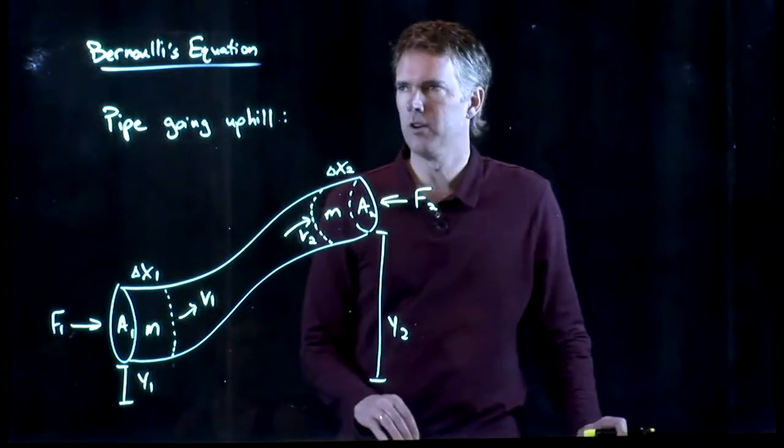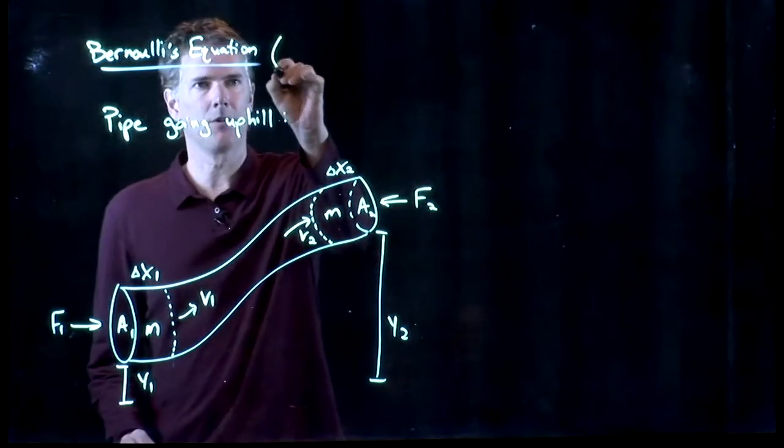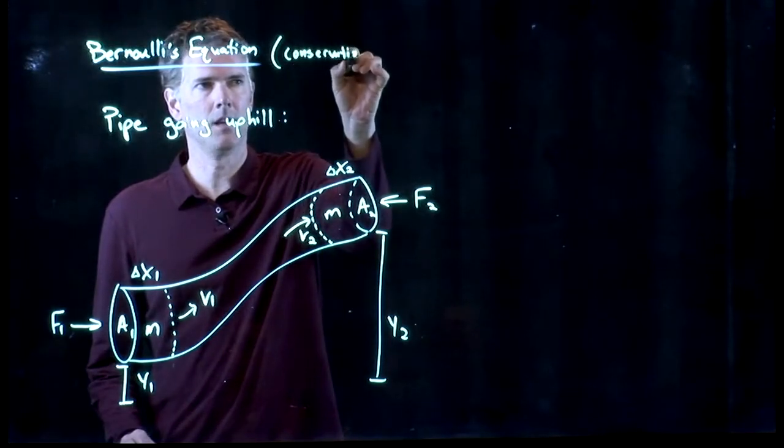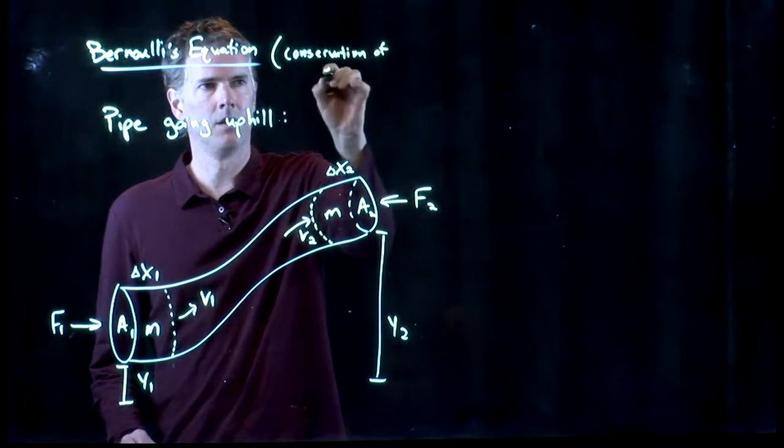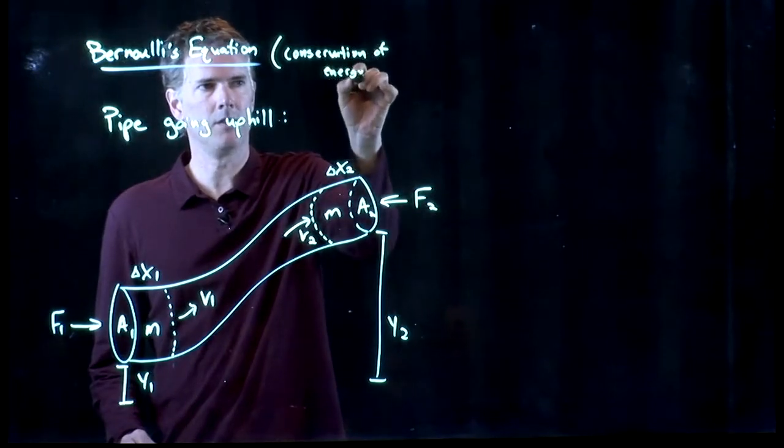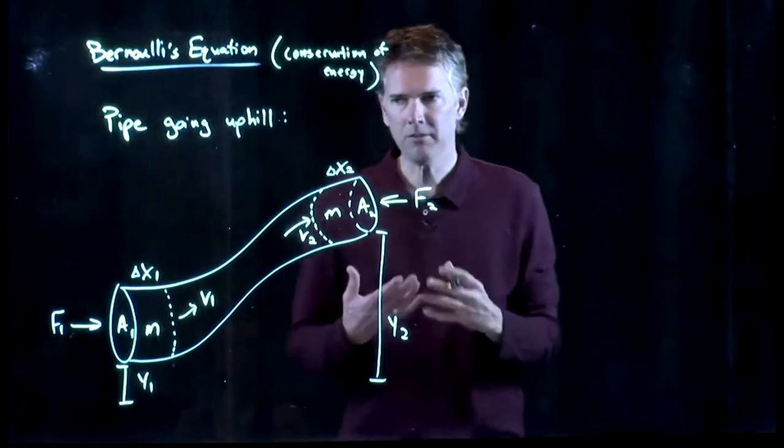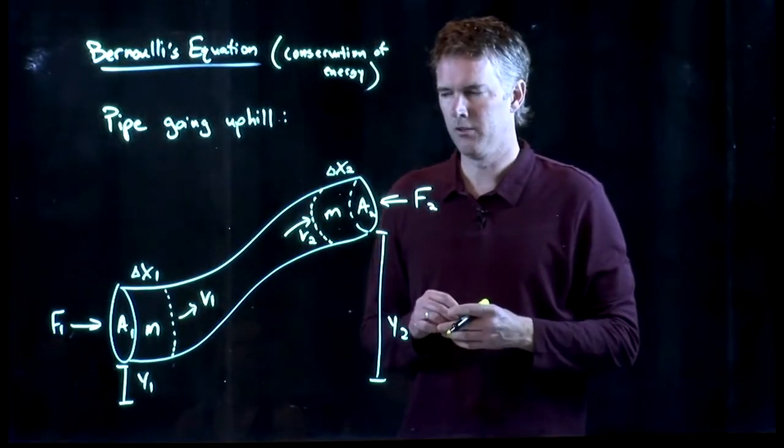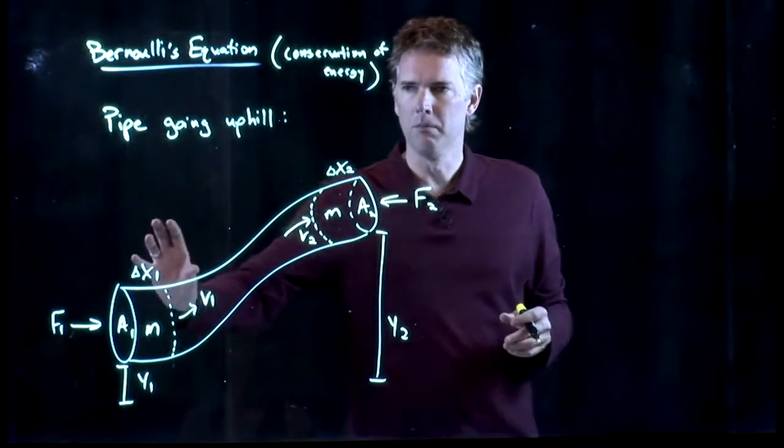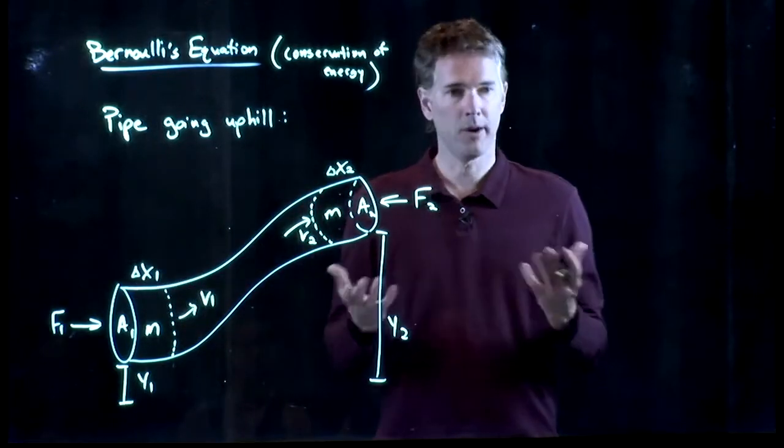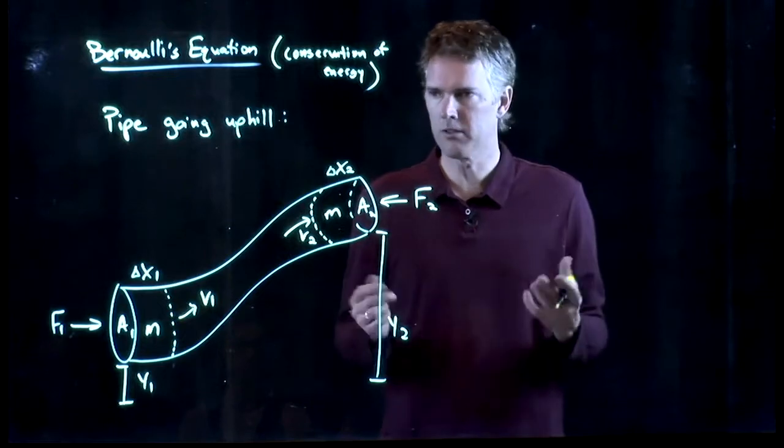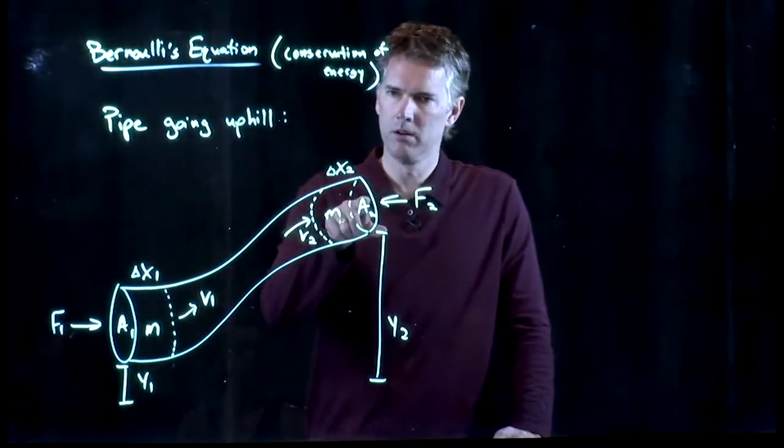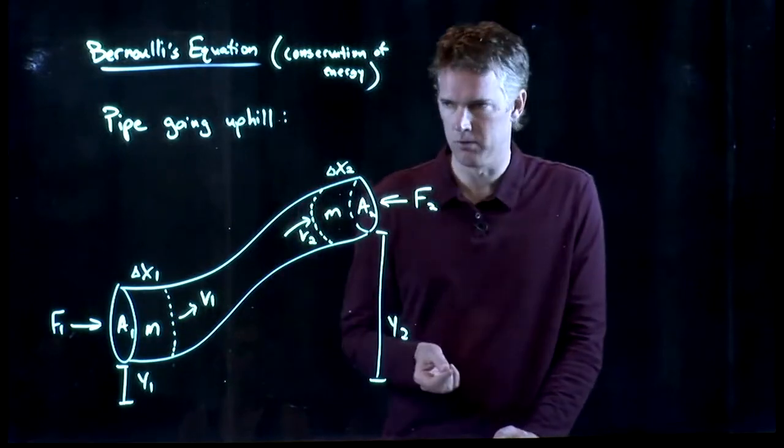Bernoulli's equation is really not so complicated because it is completely analogous to conservation of energy. It's basically conservation of energy for fluids. When you have fluids moving, you have kinetic energy. Anything moving has kinetic energy. When you have them going up a hill, you have gravitational potential energy.